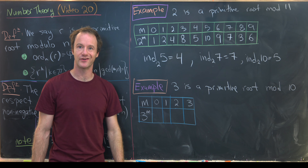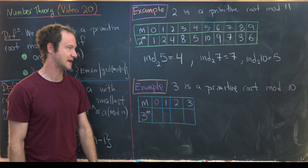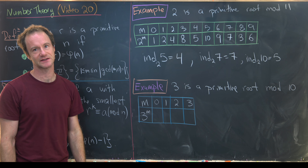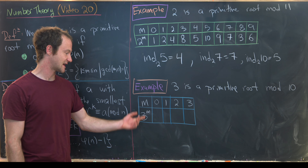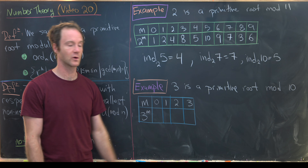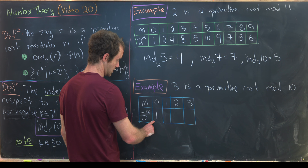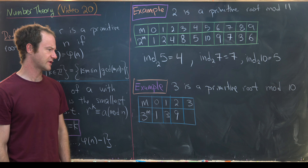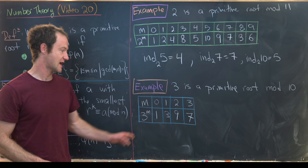Let's look at a parallel example. 3 is a primitive root mod 10 — note 10 = 2 × 5, a prime, so it has a primitive root. Since φ(10) = 4, we only need four values: 3^0 = 1, 3^1 = 3, 3^2 = 9, 3^3 = 27 ≡ 7 mod 10.